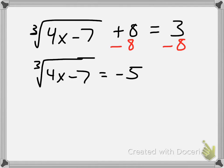Now I have the cube root of 4x minus 7 equals negative 5. Now that my radical is isolated, I'm going to raise both sides to the index. In this case, it's 3. So I want to raise both sides to the third power.